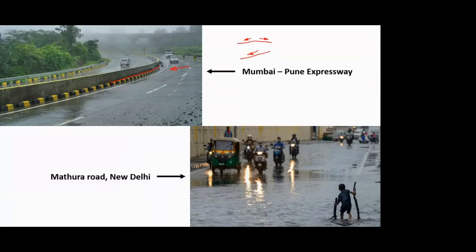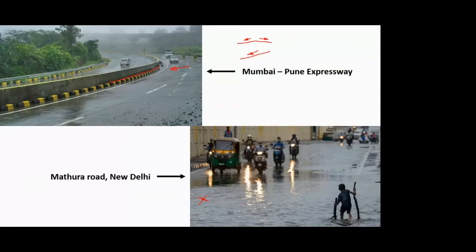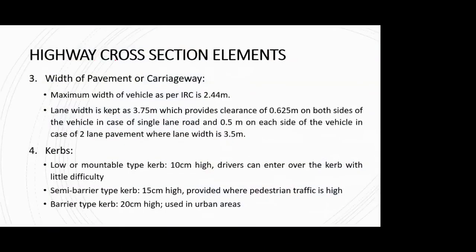In contrast, a picture of a road in Delhi (Mathura Road) shows waterlogging. Delhi has low average annual rainfall but high per-hour intensity — rainfall is infrequent but intense. In this case the camber was not properly provided, or the side drains were not provided, so water stagnates. This is the negative functioning of camber — it is not serving its designed purpose.